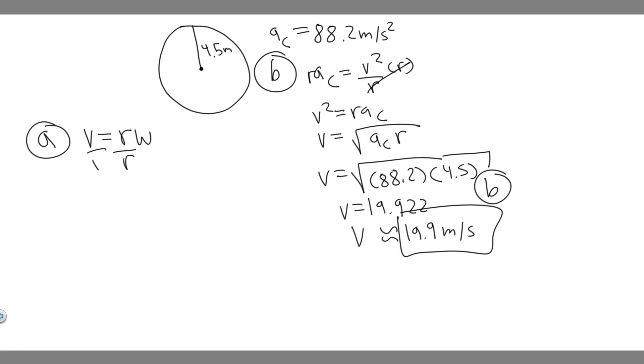If you divide by r, you'll get omega equals the velocity divided by r. What's the velocity when the centripetal acceleration is 88.2? It's 19.9. So we plug this in for V and divide by the radius. I'm going to plug in the more exact version: 19.922 divided by r, which is 4.5. When you do this, you'll get omega equals 4.427.